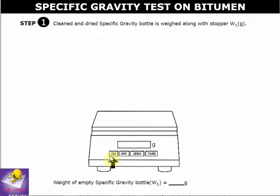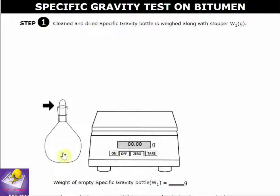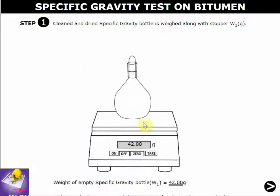First, turn on the weighing machine and tare it to zero. The specific gravity bottle is cleaned and weighed. The weight W1 is noted as 42 grams.